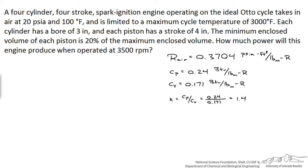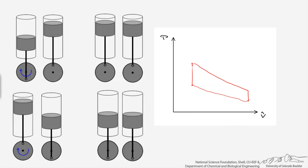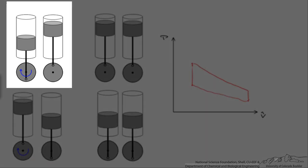We know some of the properties of air. Let's use ideal gas constant, heat capacities at constant pressure and volume, and then the heat capacity ratio of K. So here is the ideal Otto cycle on a PV diagram. And what I'm drawing is a piston cylinder arrangement in four different phases of the cycle. So we go from point one to point two, which is an adiabatic reversible compression, so it's isentropic compression.